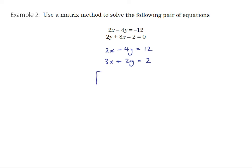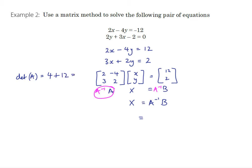Now we can convert that to a matrix equation: 2, negative 4, 3, 2 times x and y equals 12 and 2. Again ax equals b, we're going to multiply by the inverse to cancel that out. We're going to do the same to this side so x is the inverse of a times b.